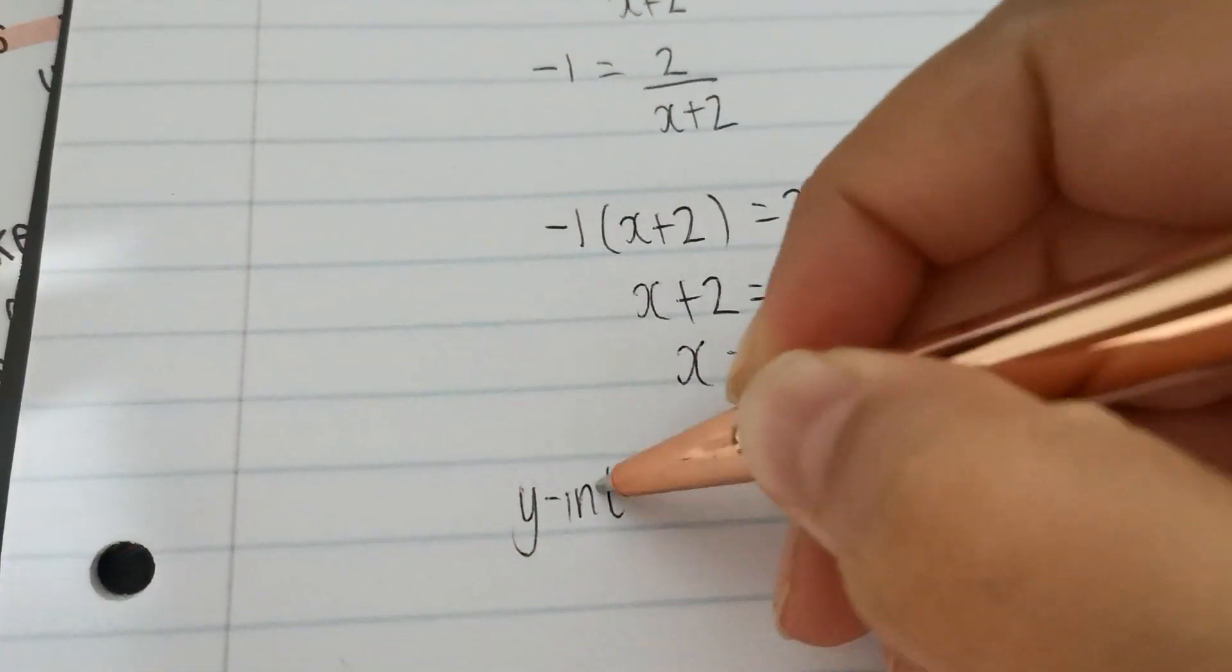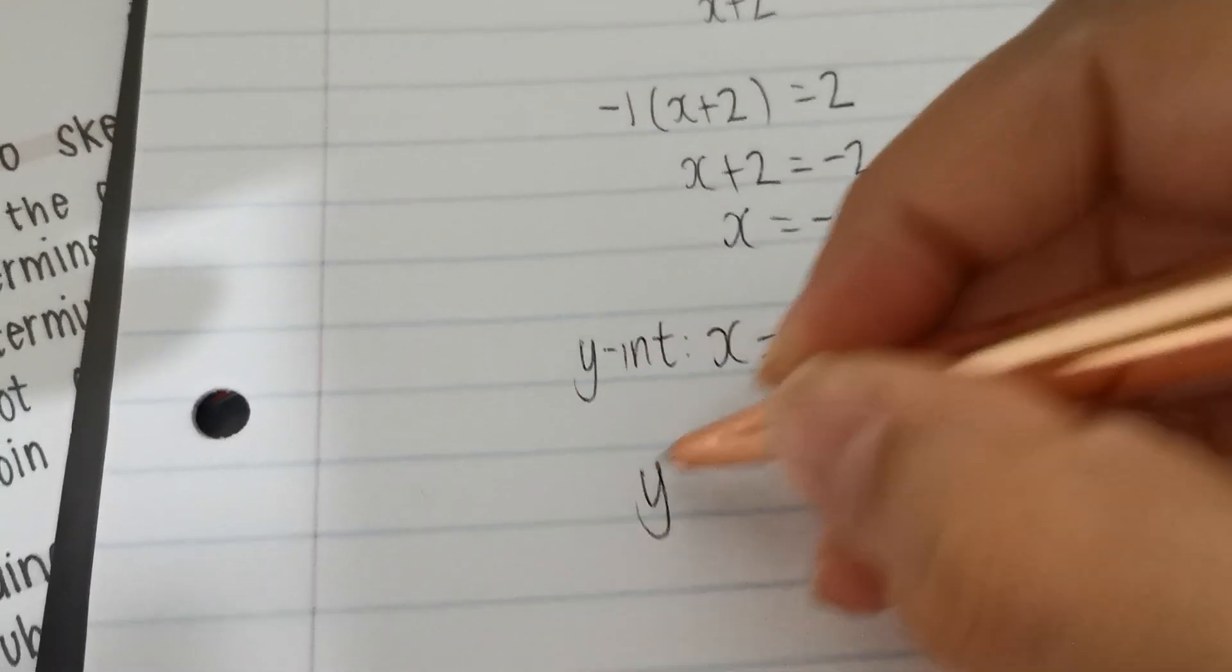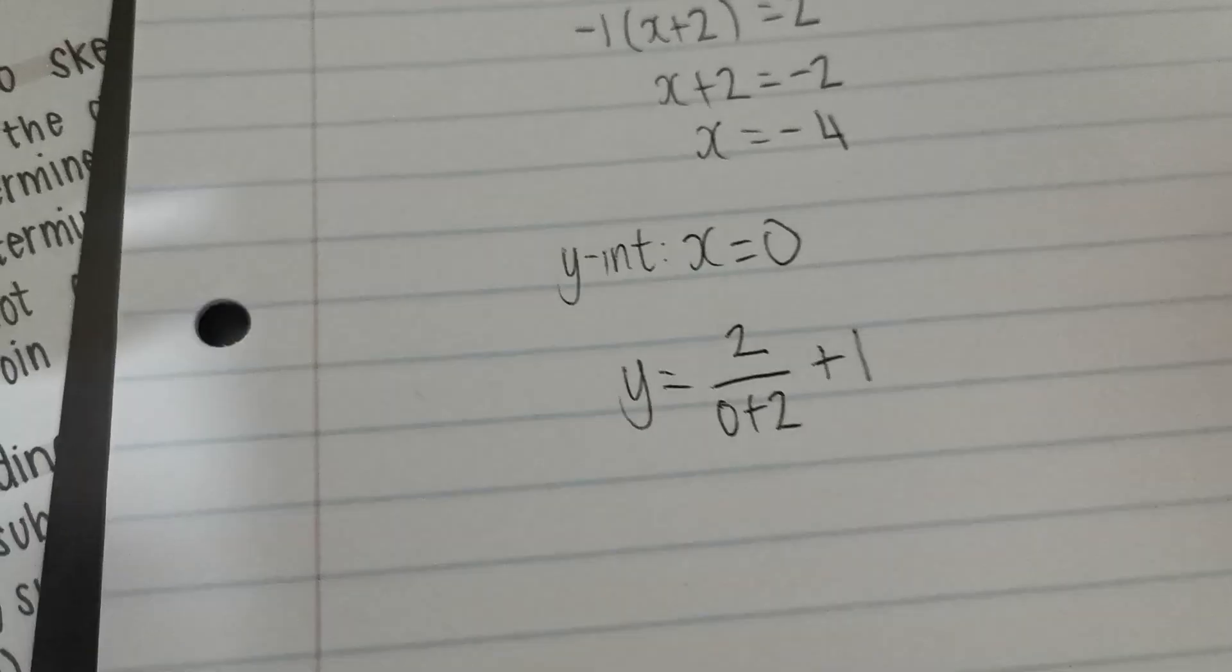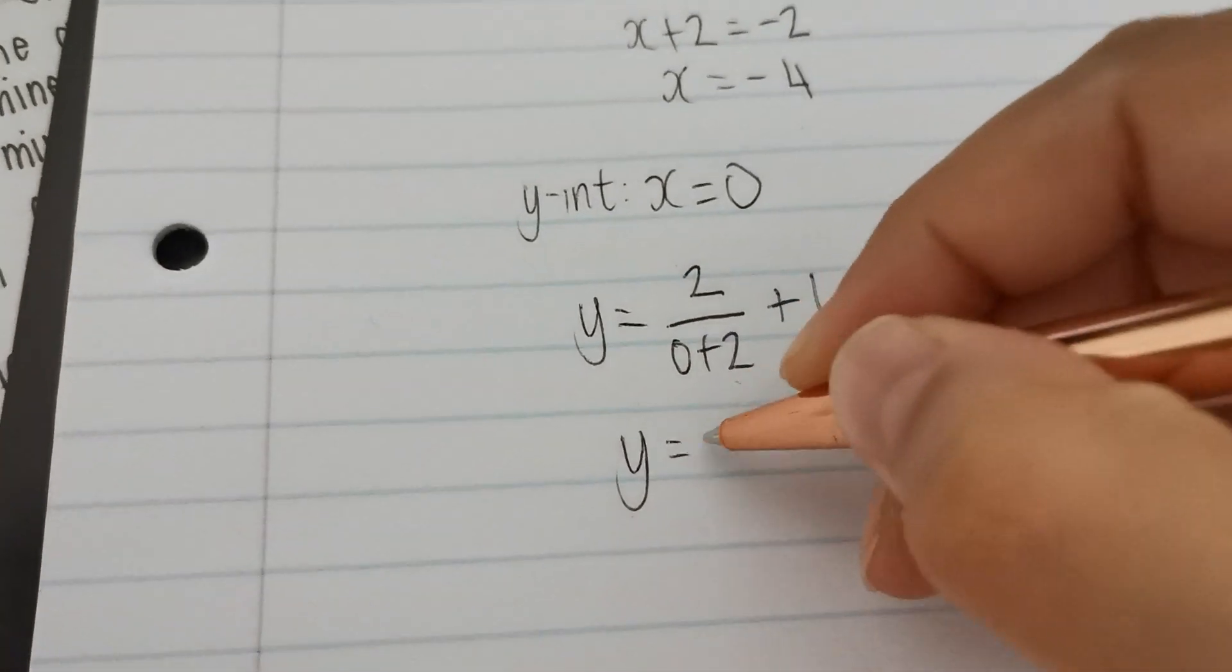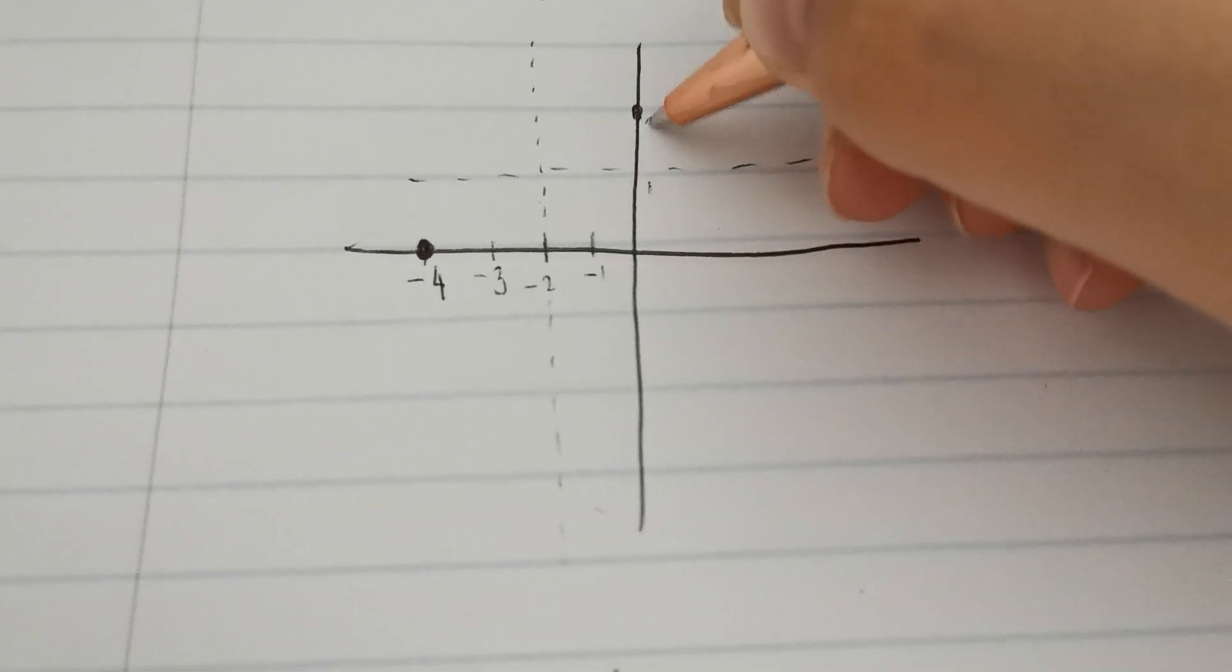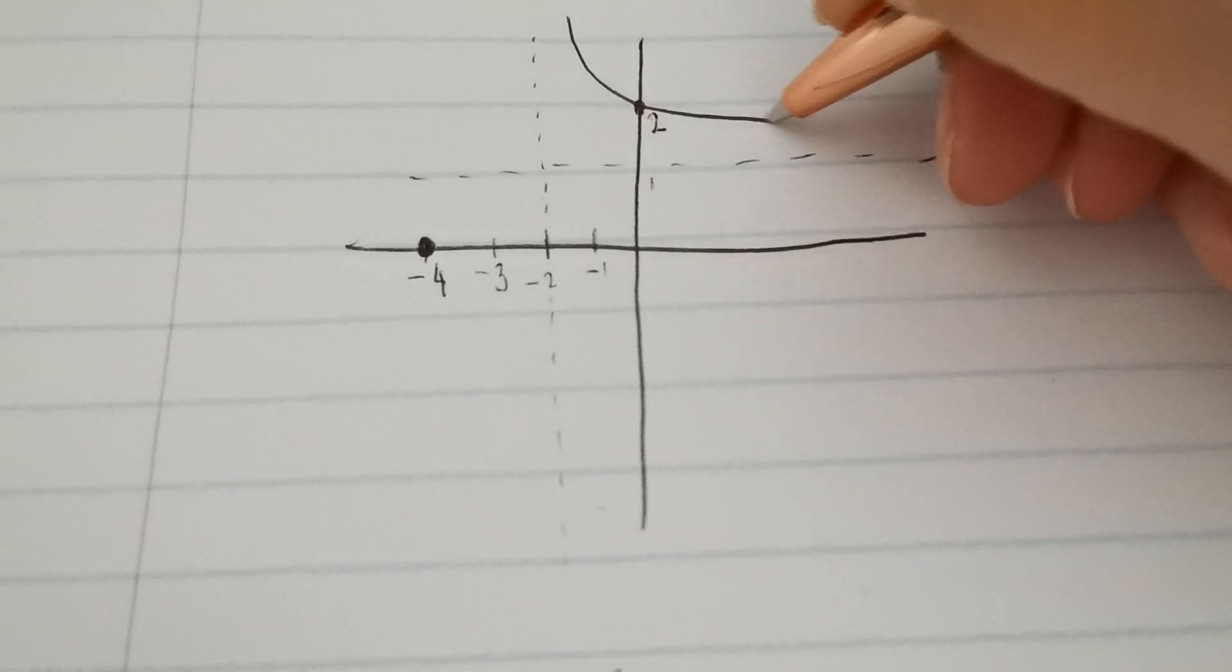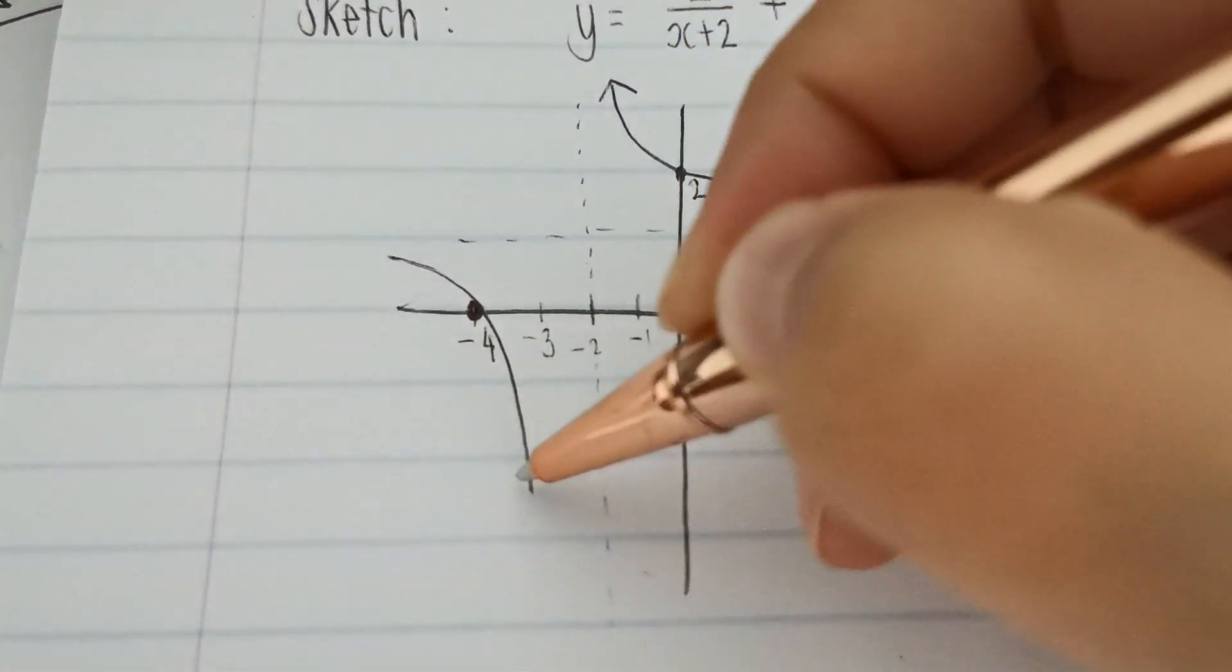y intercept where x equals 0. So y equals 2 over 0 plus 2 plus 1. This gives me 2 over 2, which is 1. 1 plus 1 is 2. So let's go fill in my y intercept at 2. We already said our graph is looking something like this. And something like that.